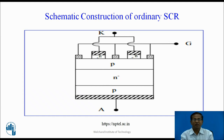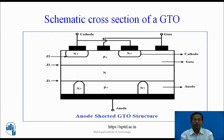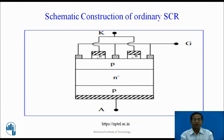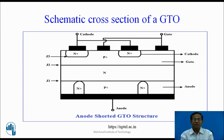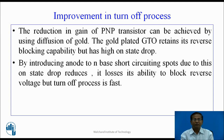This is the schematic construction of ordinary SCR — a four-layer PNPN device. The anode is connected to the P region, cathode is connected to the N region, and the gate is connected to the P region. This is the schematic cross-section of the GTO, also called the interdigited gate cathode structure. Compared with the SCR, N regions are diffused in the anode section and heavily doped N regions are diffused in the cathode section. When we apply negative IG, the GTO turns off, but there is a possibility of current crowding. To reduce current crowding and avoid second breakdown, it is essential to reduce the gain of the PNP transistor.